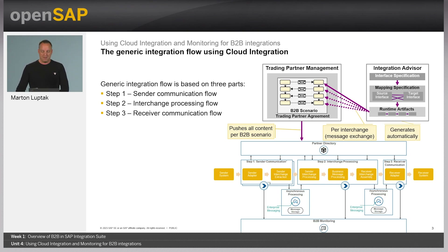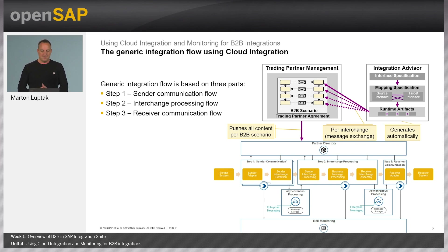Step two, the interchange processing flow, gets the necessary parameter values as well as the binaries from the partner directory. The binaries in this case include the integration advisor artifacts as well as extraction and assembly information. It extracts the data from step one, processes source into target interchange format referenced from integration advisor, assembles the target interchange, and hands over to step three.